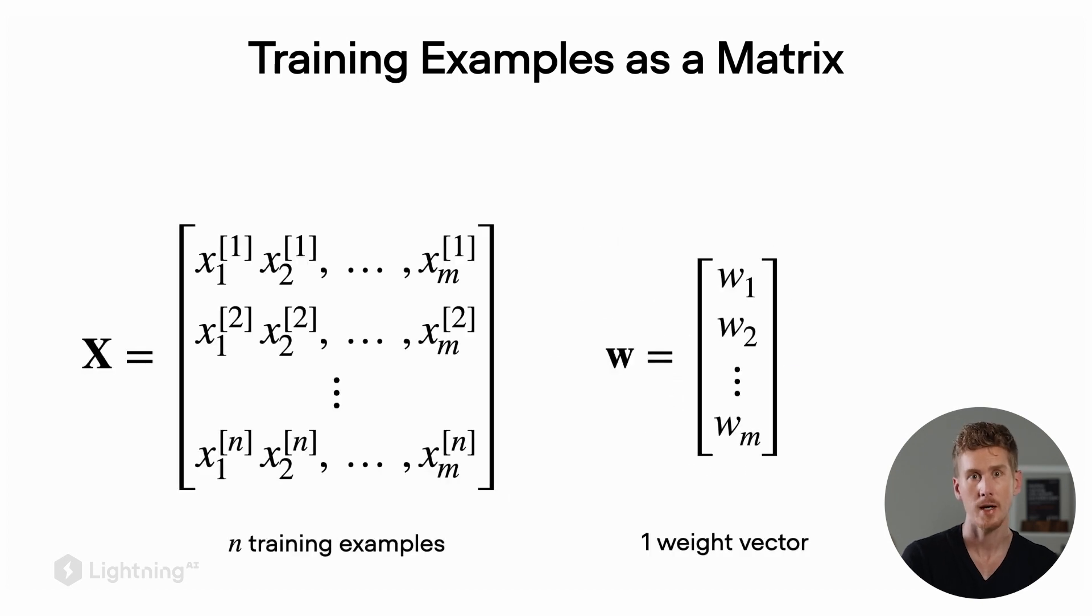Each feature column still corresponds to a single weight. So we still have a weight vector, not a weight matrix, because we use the same weight for each training example. In this case, w1 would be used for feature column one, w2 would be used for feature column two and so forth. So for a data set with m features, we still have a weight vector consisting of m weights.